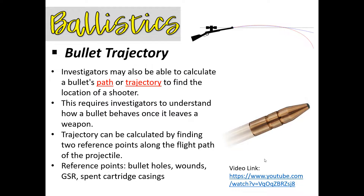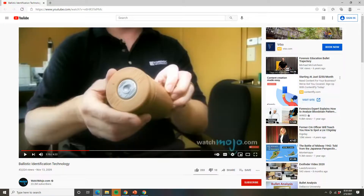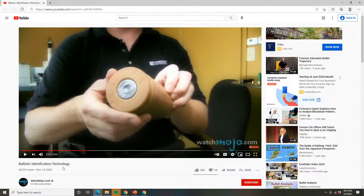Before we end, here's a quick assignment. We're going to do some research on the database that houses ballistic information. Just like AFIS for fingerprints and CODIS for DNA, there's a database called IBIS — the Integrated Ballistic Identification System. Go to YouTube, type in 'ballistic identification technology,' and watch the video produced by WatchMojo. It's only about four minutes and does a great job walking through what we discussed today and expanding on the IBIS database.